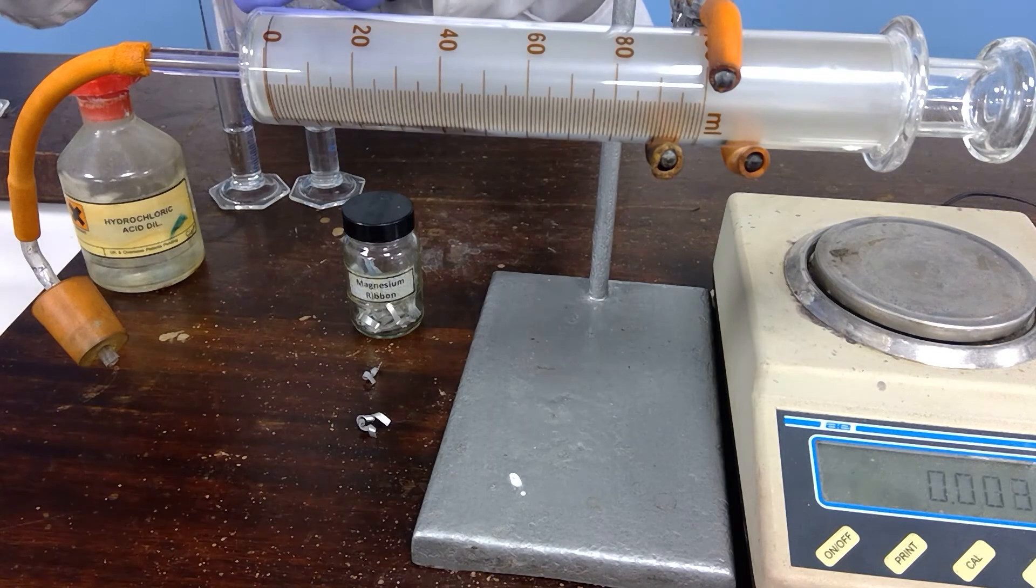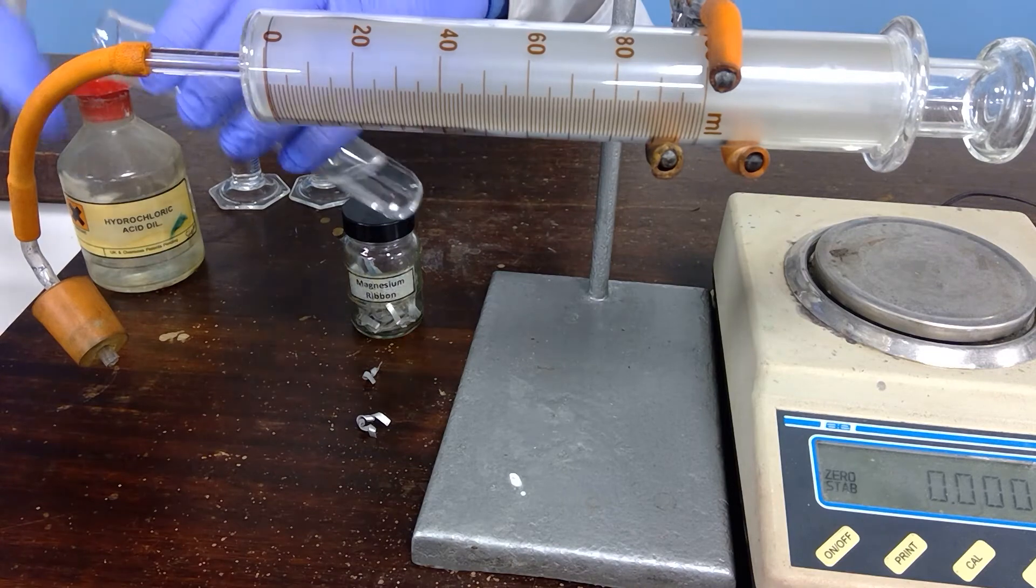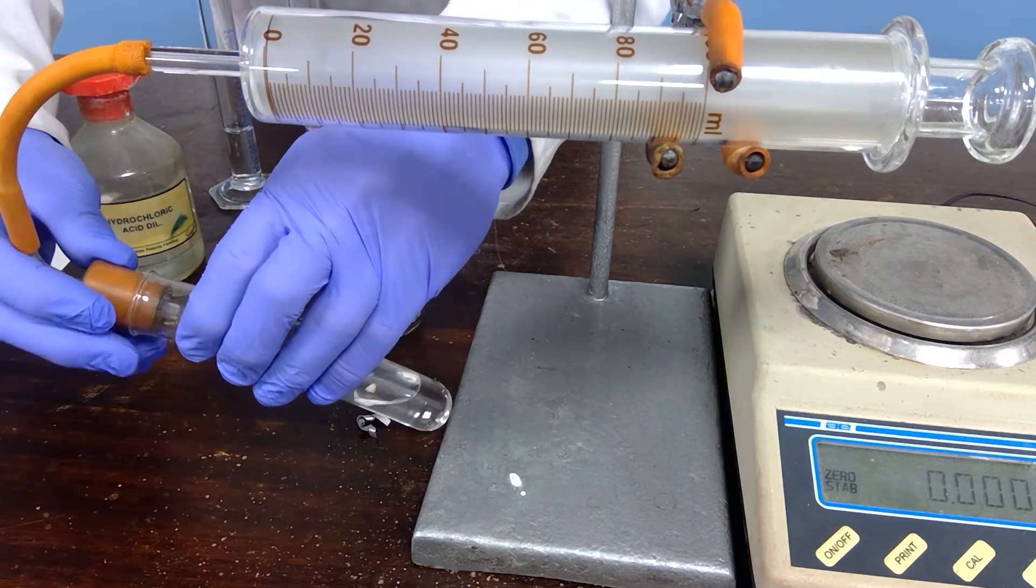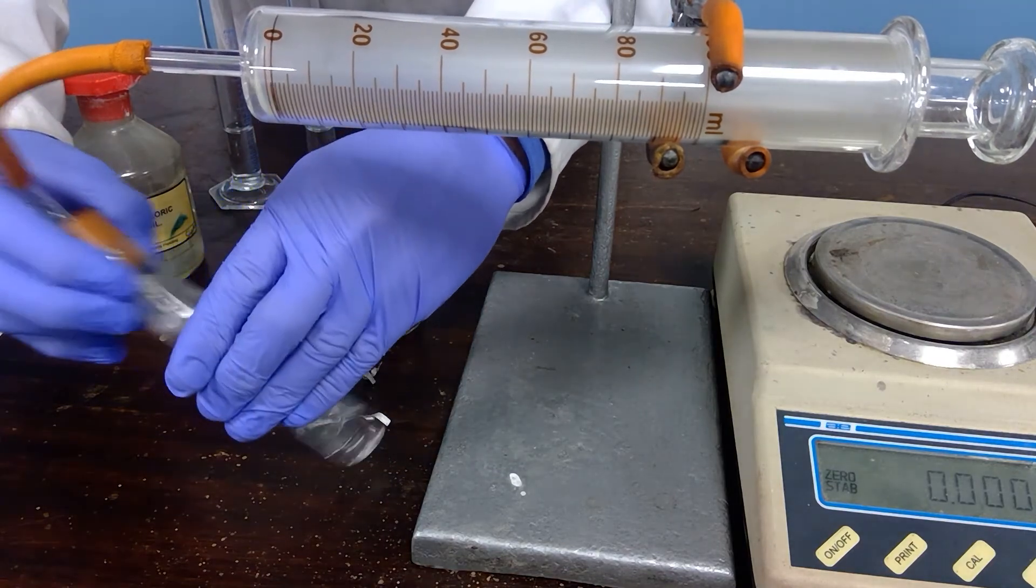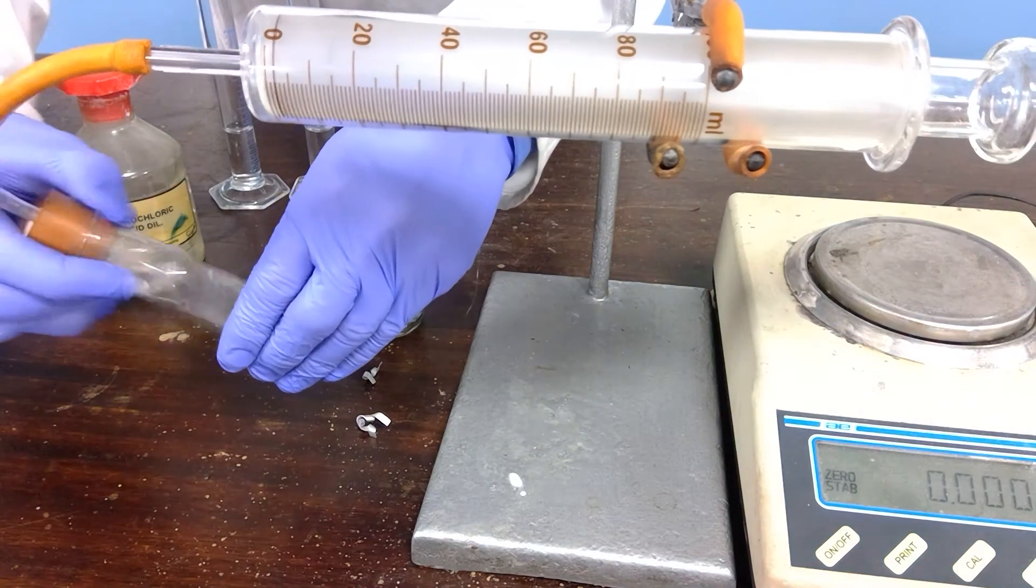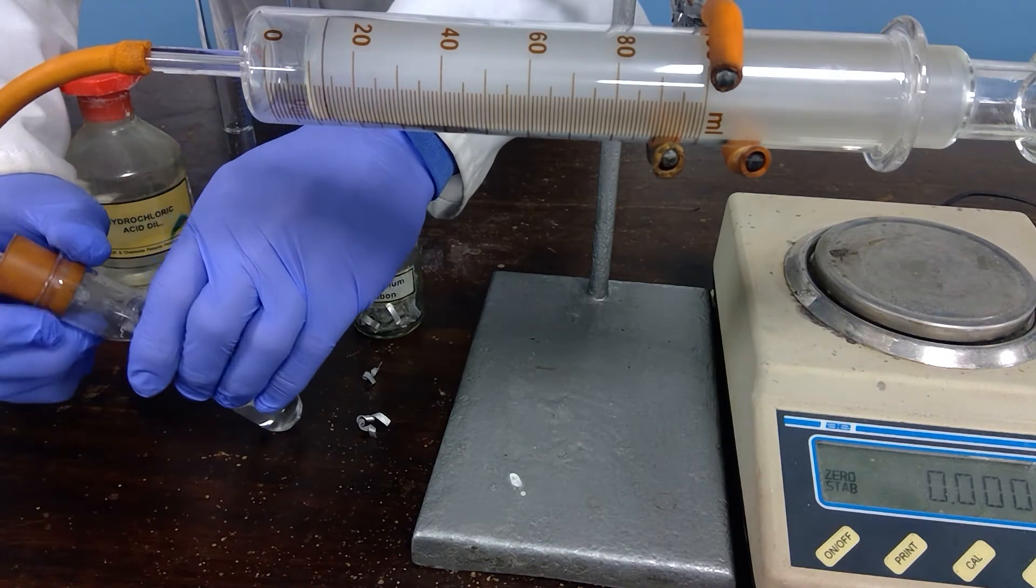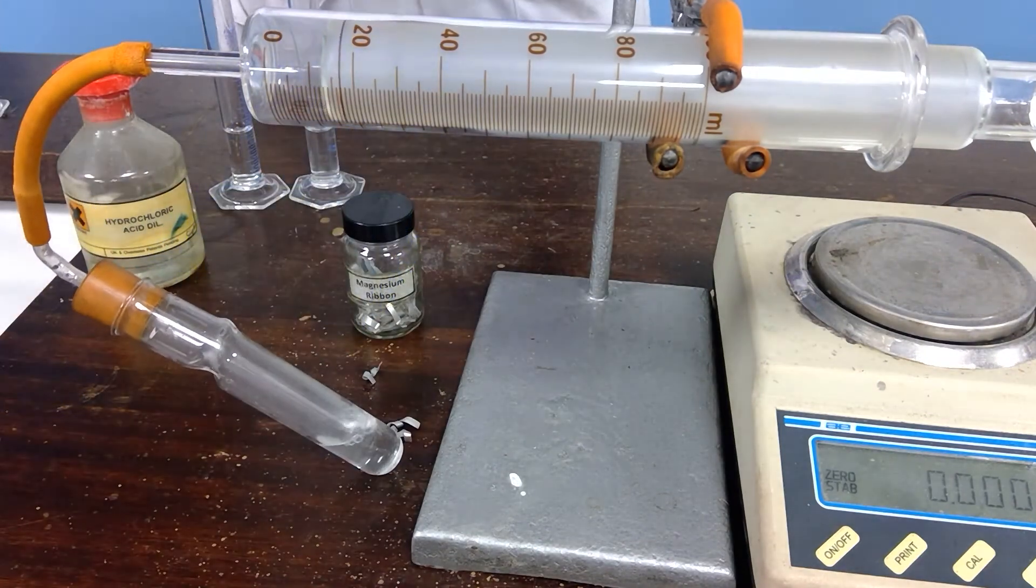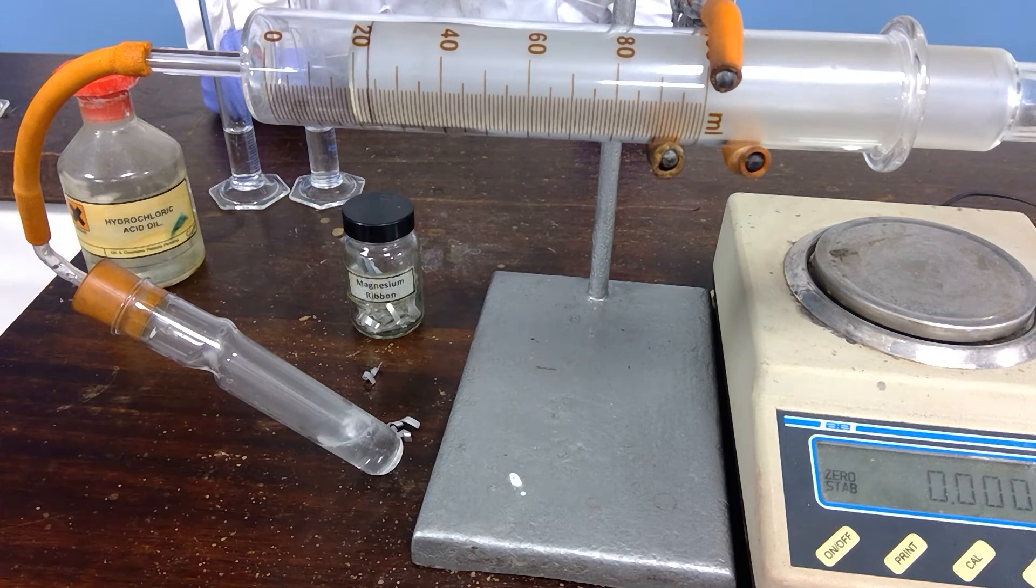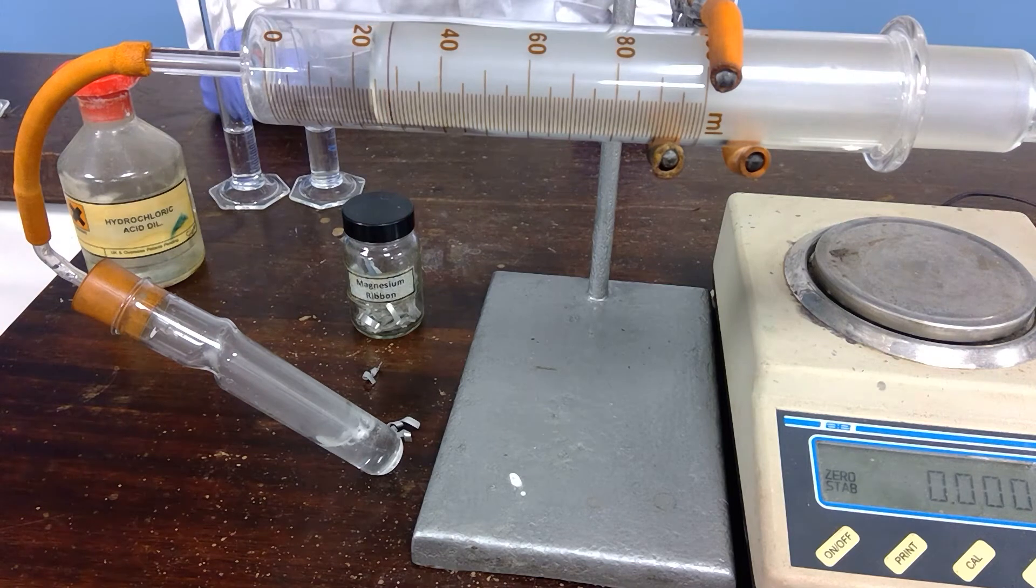I will place that into the upper compartment, make sure this is at zero, push the bung on firmly, and encourage the magnesium to fall to the bottom of the tube, which is done, and see what volume of hydrogen gas is produced. As you can see, the magnesium is reacting quite quickly with the hydrochloric acid.